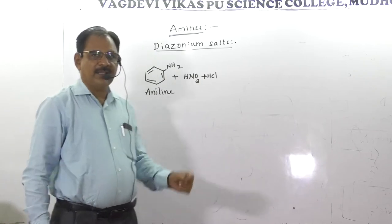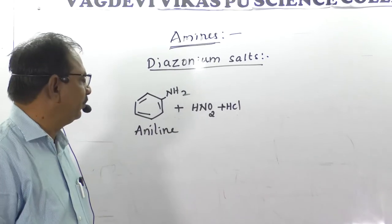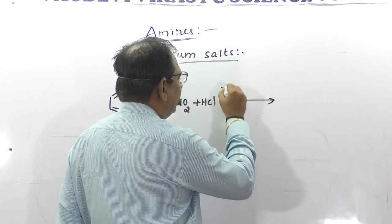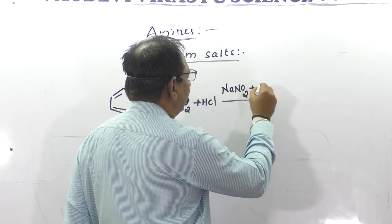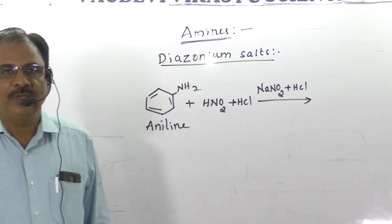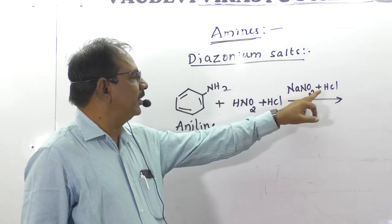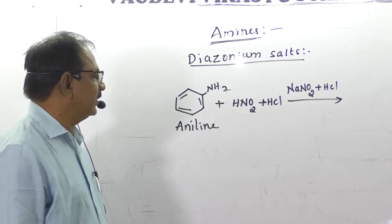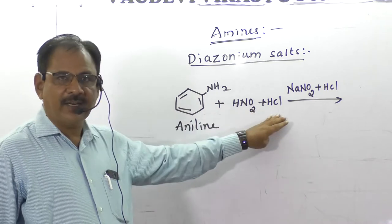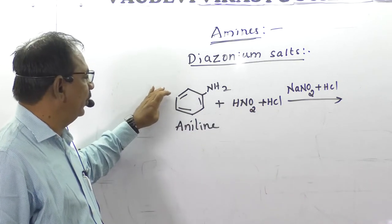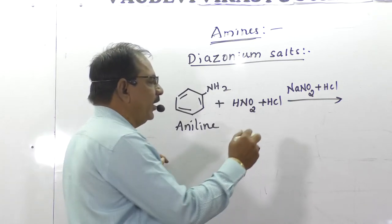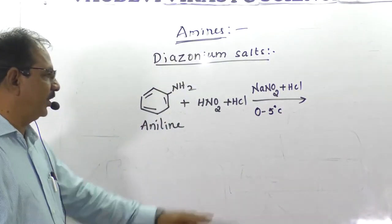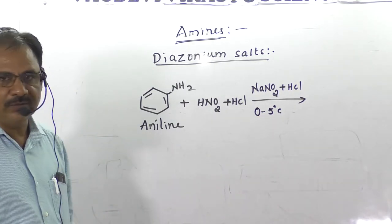As I told you in the last class, nitrous acid is an unstable acid. Whenever we require nitrous acid, we prepare it by mixing sodium nitrite in hydrochloric acid. When both compounds are mixed together they form an unstable acid called nitrous acid. This nitrous acid along with hydrochloric acid is added to primary aromatic amine, which undergoes diazotization only at 0 to 5 degrees Celsius.